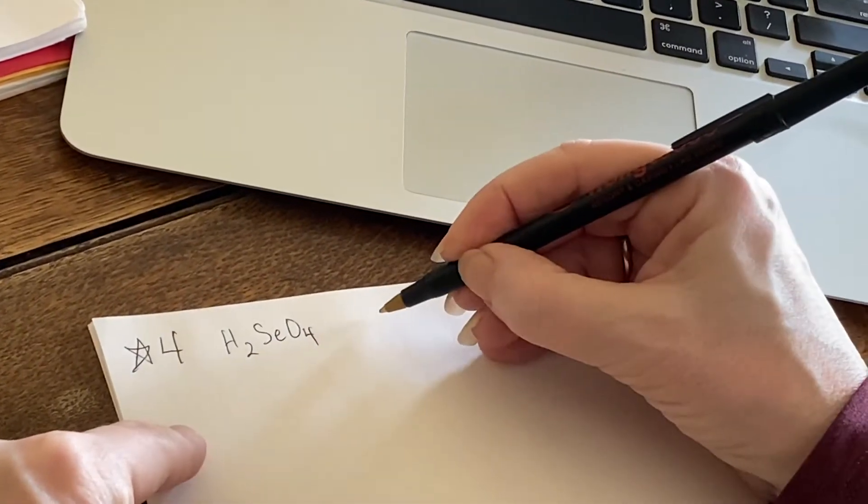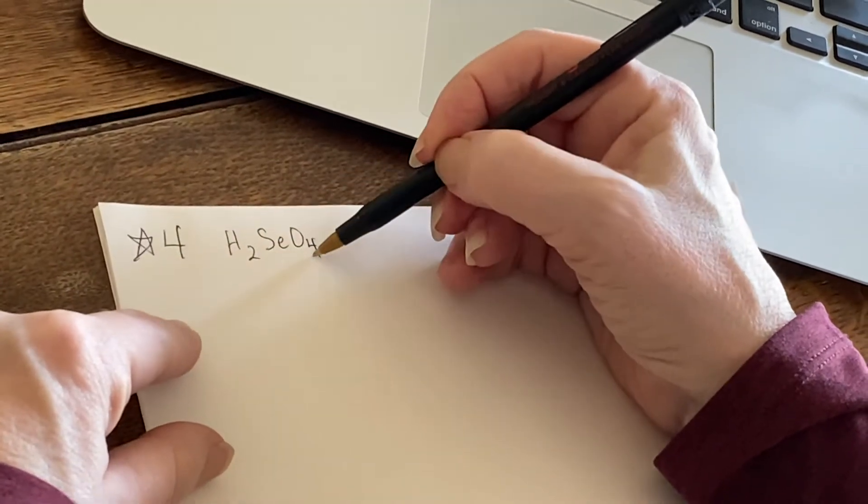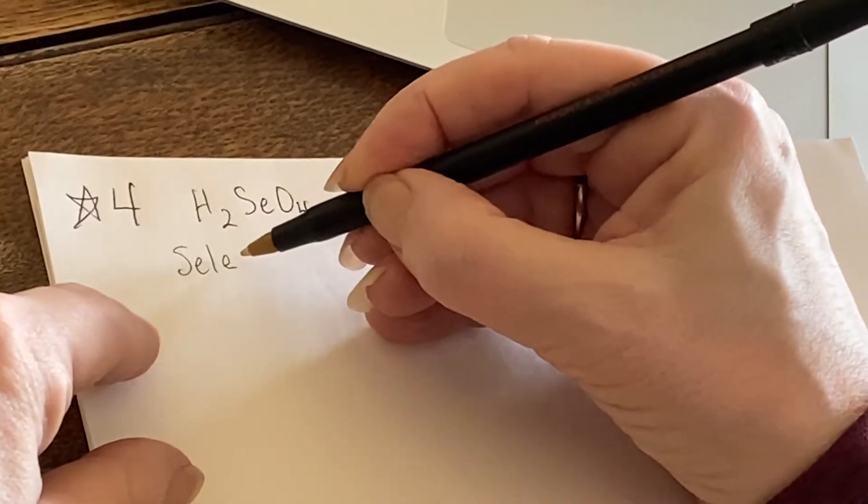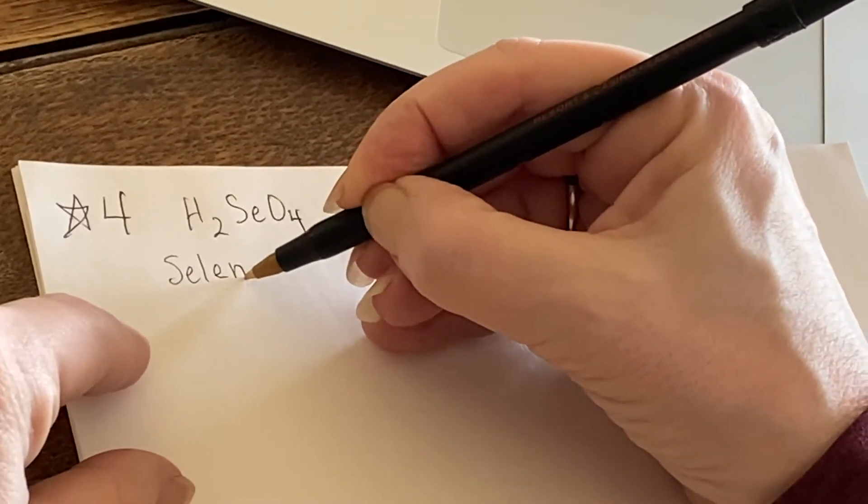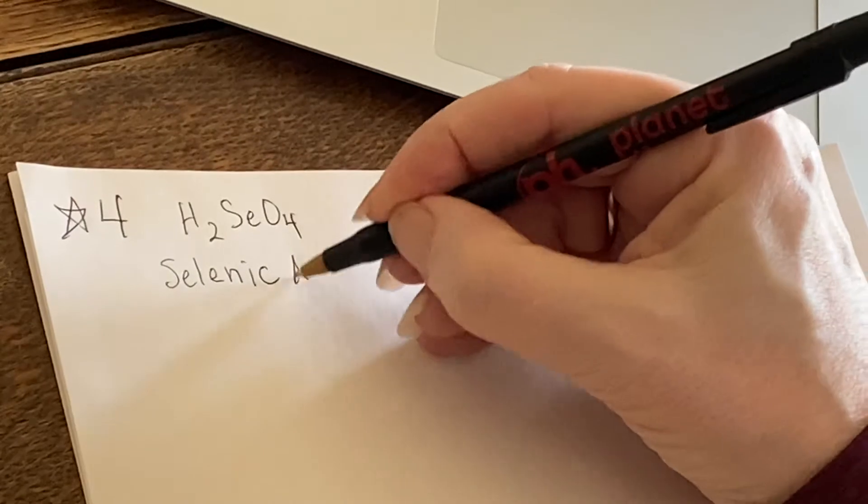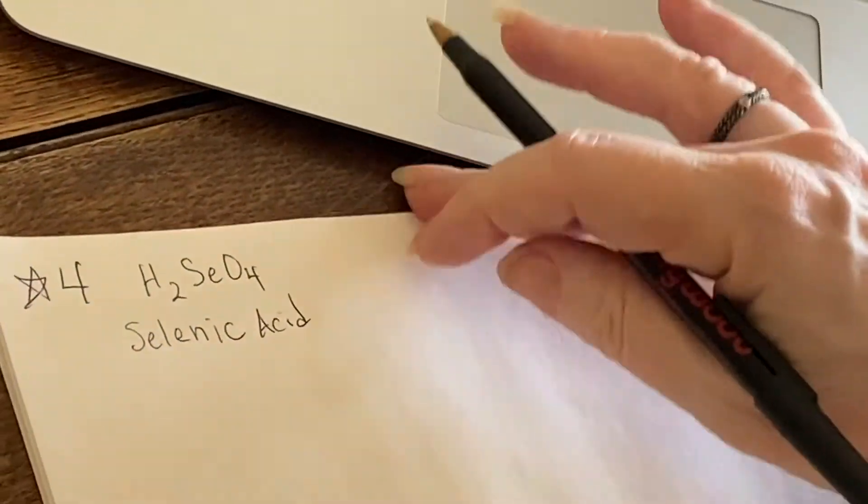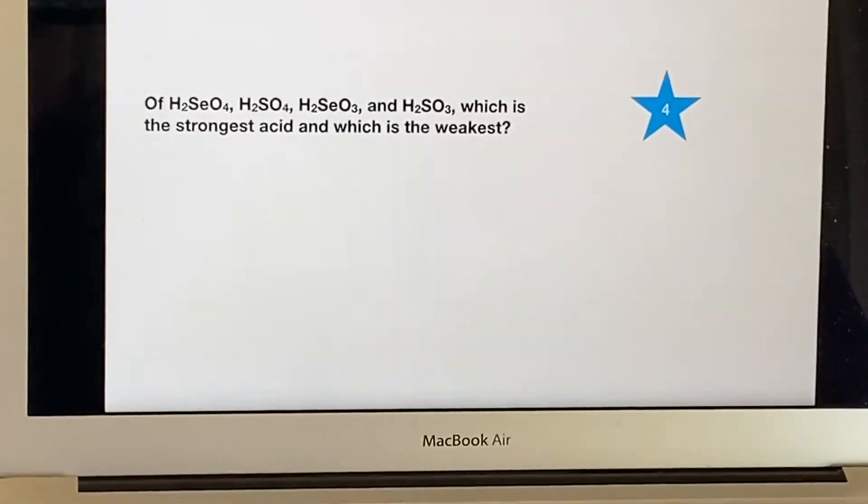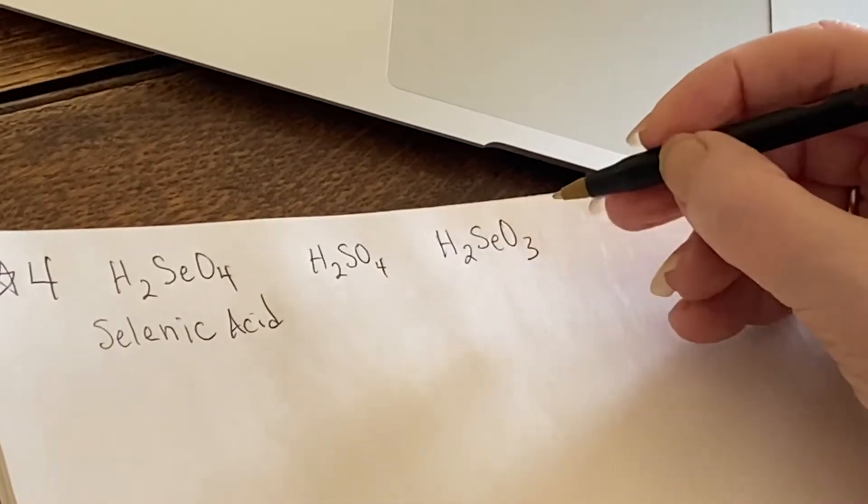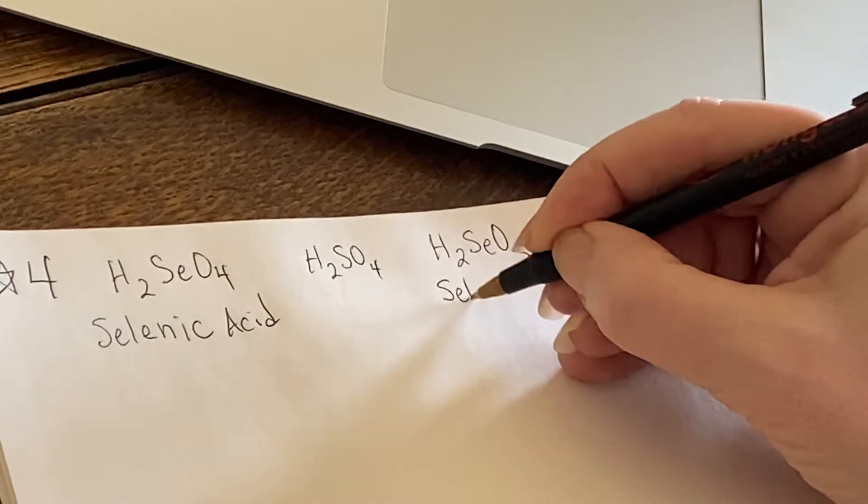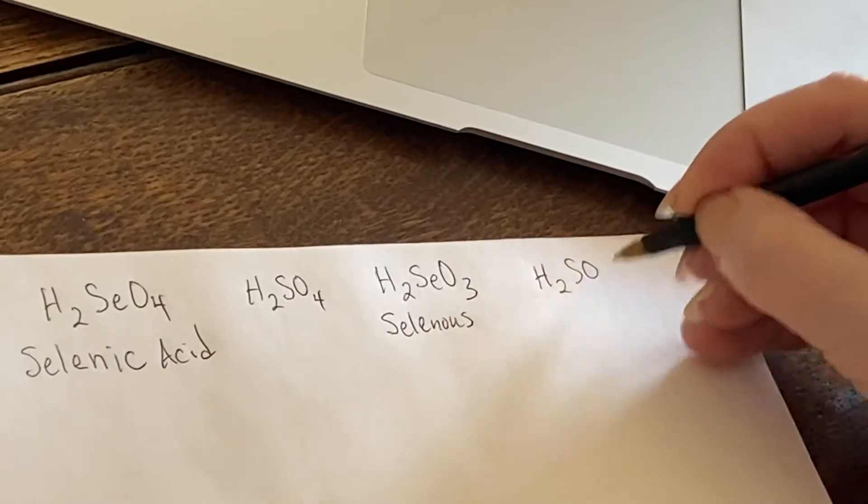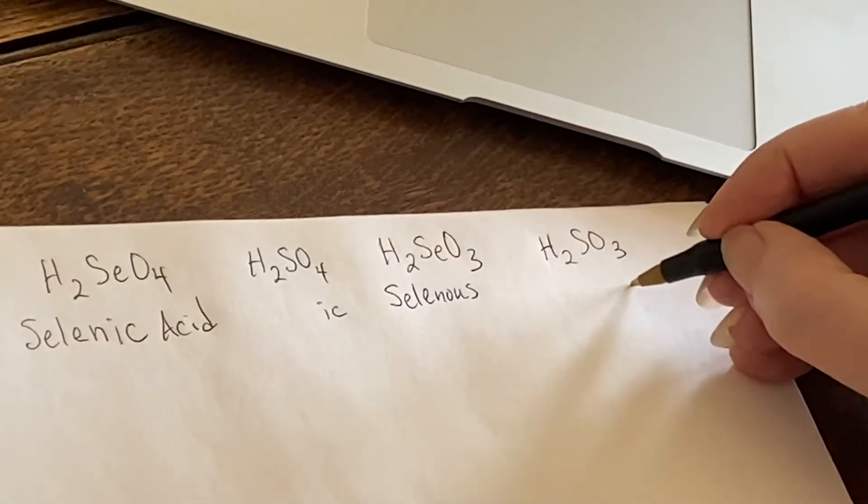So all right, what do we have here? Let's look at what they are so that we can understand what we're talking about. This is, this would be a selenate, so this would be selenic acid. Okay, that's a weird name. That's because we don't use it, right? So we don't know it. Here's your sulfuric acid. Here would be, hmm, there's only three here, so that would be selenite. This would be selenous acid.